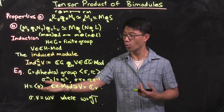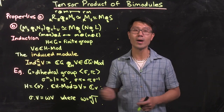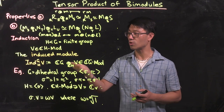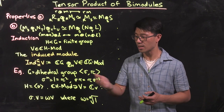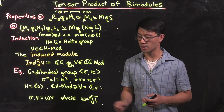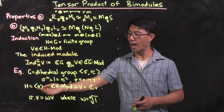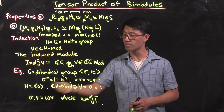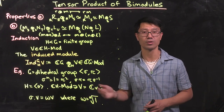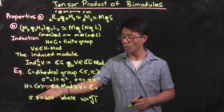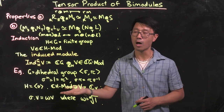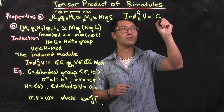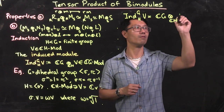Let's look at a concrete example. Let G be the dihedral group generated by a rotation σ of order n (so σ^n = 1) and a reflection τ (so τ^2 = 1), with the skew commutation relation στ = τσ^{-1}. The subgroup H is generated by σ — a cyclic group of index 2. We take V to be a CH-module: since H is cyclic, all irreducible representations are one-dimensional, so V = Cv with σ·v = ωv where ω is an n-th root of unity.